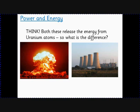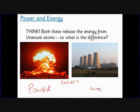The nuclear power station releases the same amount of energy in a very slow way. So the same amount of energy is released, but the atom bomb has a high power because the energy is released very quickly. The power station has a very small power — relative to the bomb — because the energy is released very slowly.